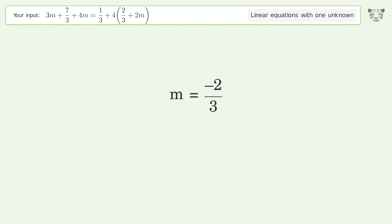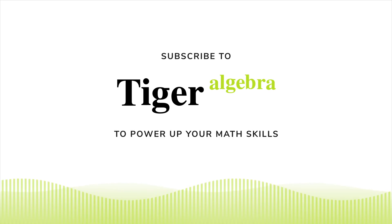And so the final result is m equals negative 2 over 3.